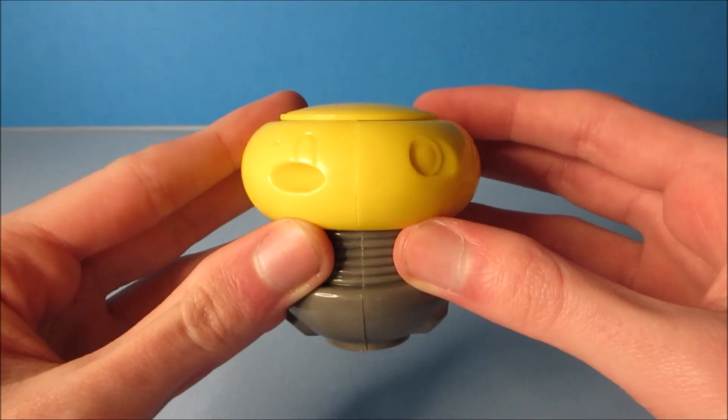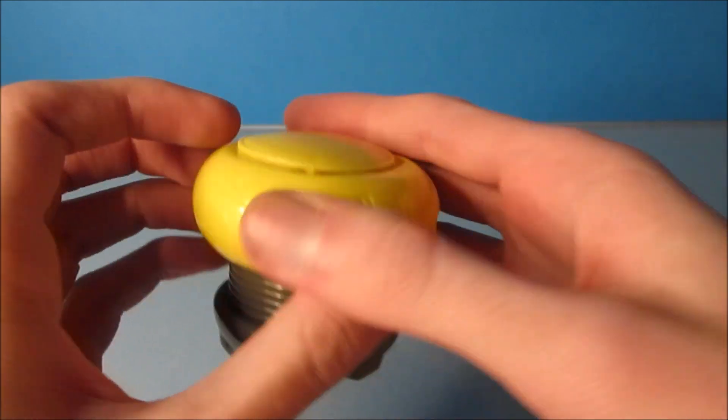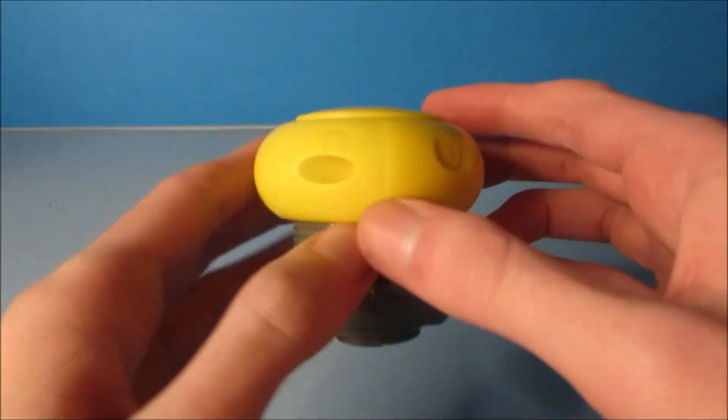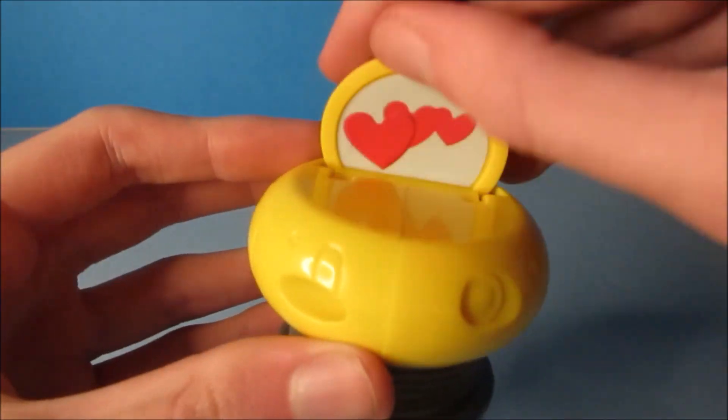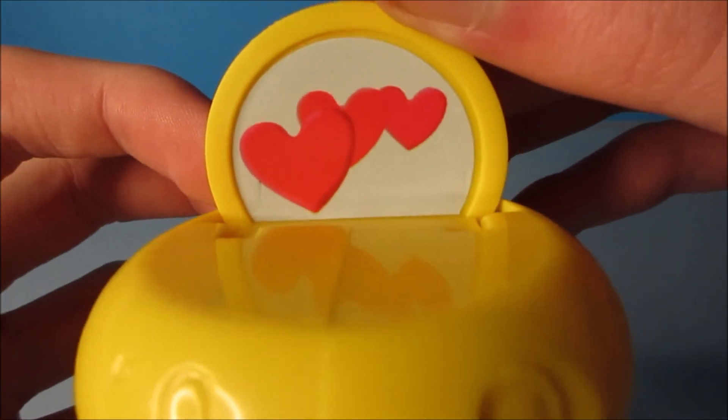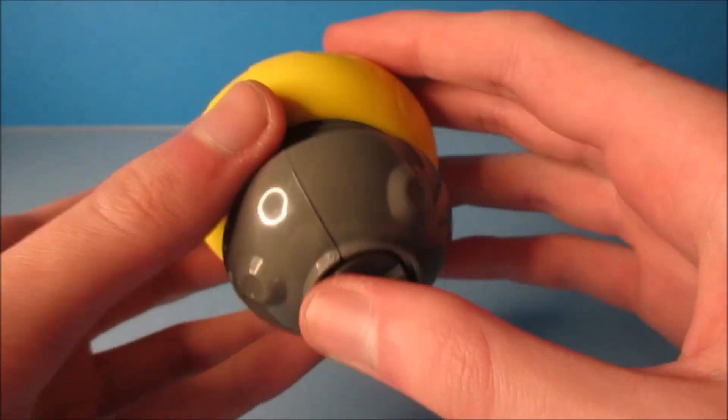Up next on the set is Weebo. This one looks so cool and Weebo is one of the most iconic favorite characters in the Flubber movie. When you open this up inside, there's little hearts on the screen.